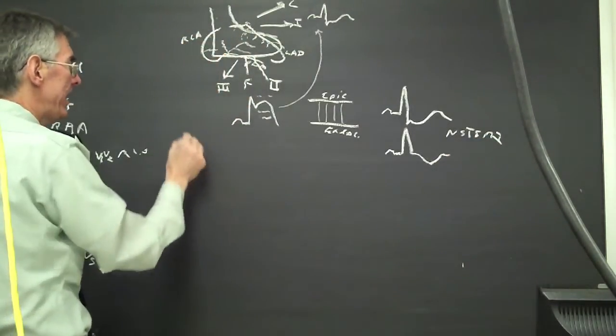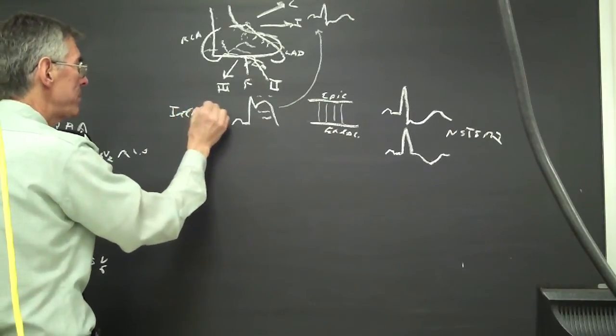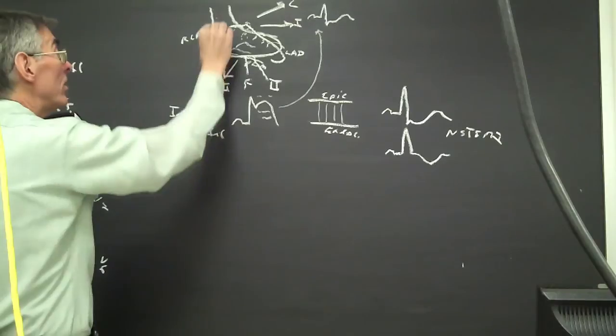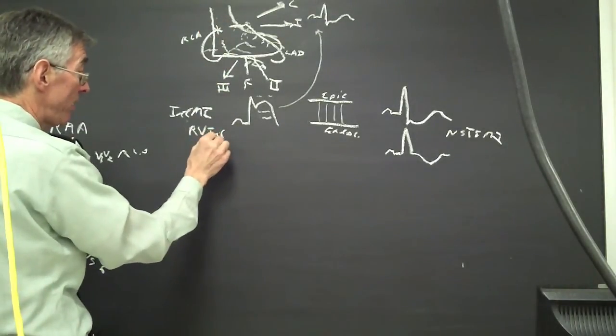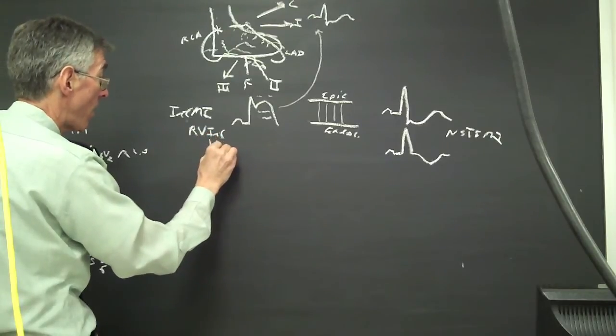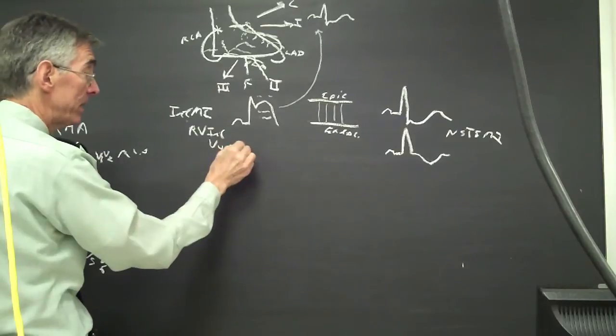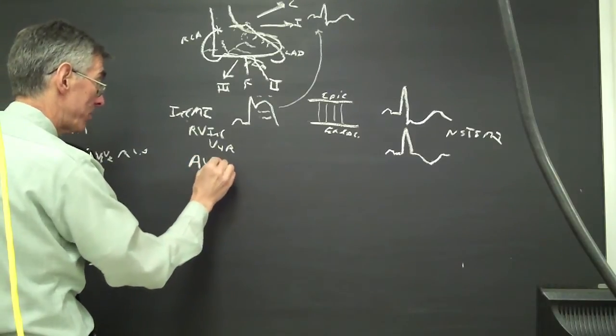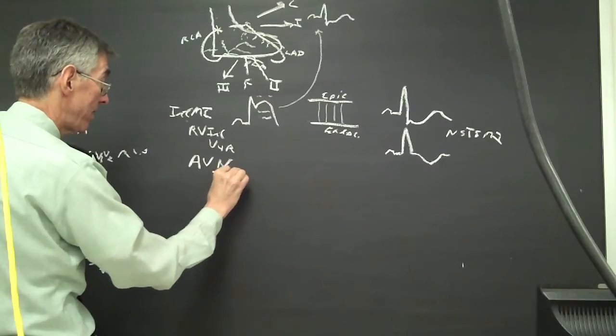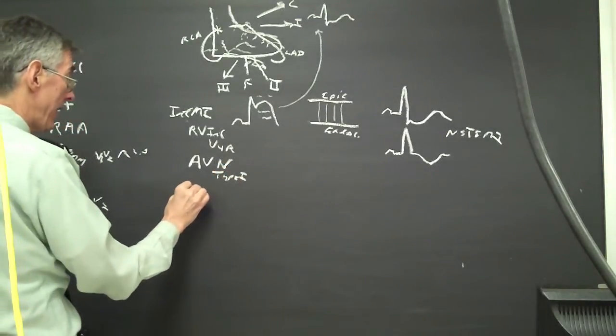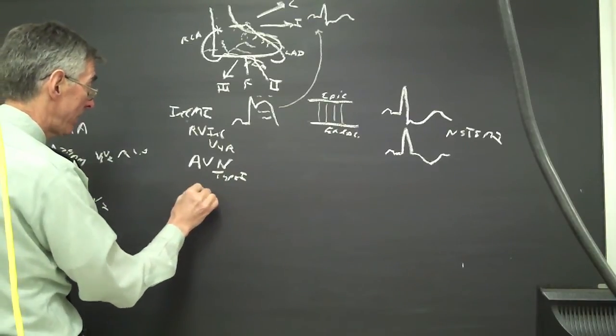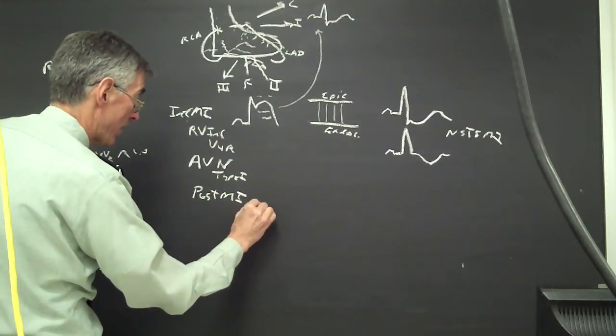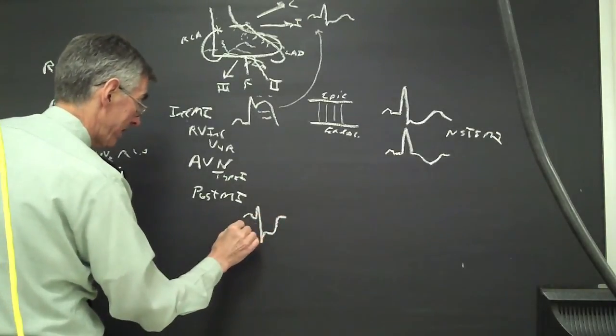With an inferior MI, I look for three basic changes in addition to that. I look for an RV infarction because if I occlude the vessel here, I'm going to see an RV infarct in V4R, the right-sided leads, and I'll see a millimeter ST segment elevation. I'll also look for AV nodal conduction abnormalities such as type 1, second degree AV block. And then I'll also look for posterior MI with ST depression in lead V1.